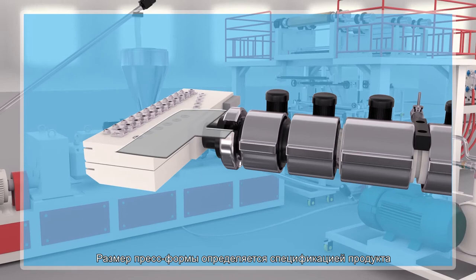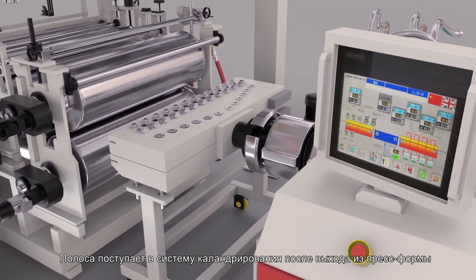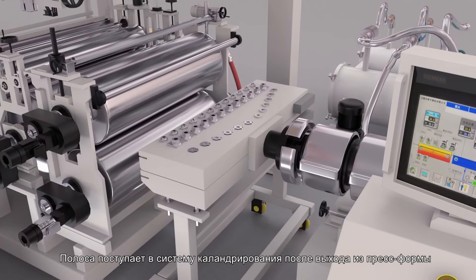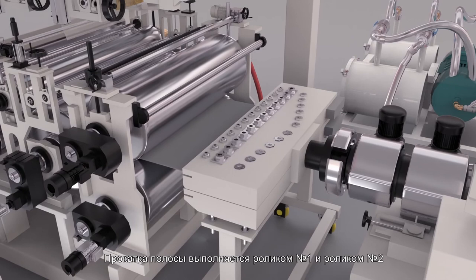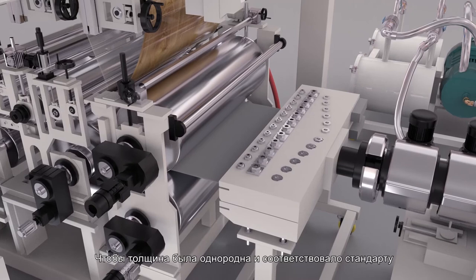Calendering System. The material strap comes out of the tooling opening and then into the 5-roller calendering system. Firstly, it is rolled by number 1 roller and number 2 roller to ensure that the thickness is uniform and up to the standard.